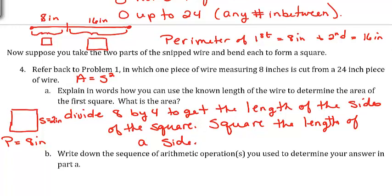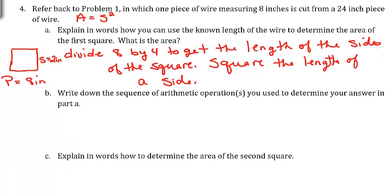So now we want to square the length of a side. We would take 8 divided by 4, which gives us 2. Then we take that 2 and square it, which gives us 4. So the area is 4 inches squared.